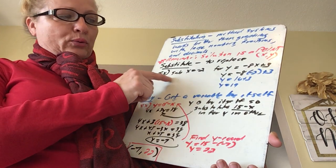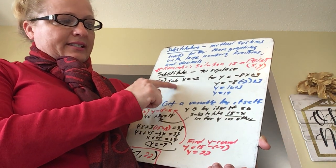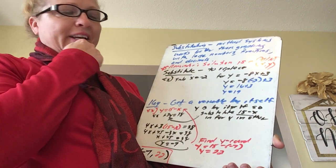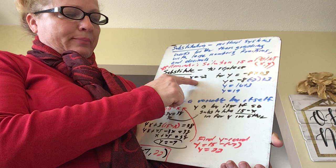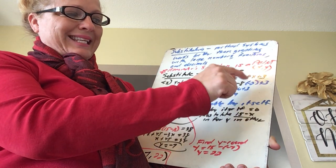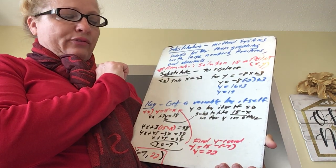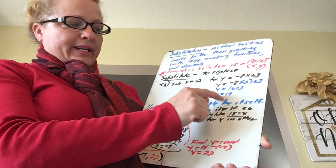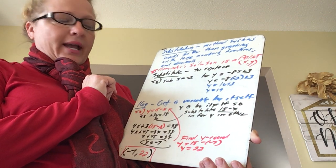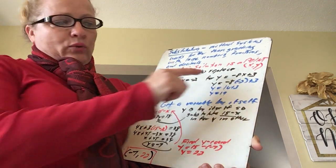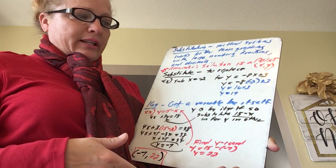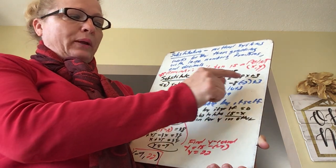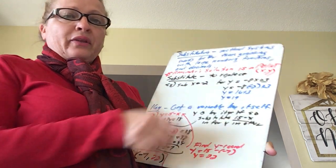Let's do a very simple example — this is not a system. I just said substitute x equals negative 2 into this linear equation. If I put in negative 2, which means I'm replacing x with negative 2 — substitution means to replace — I get 16 plus 3 is 19. This is just a line, and negative 2, 19 would be a point on that line. The point was to remind you that substitution means we are replacing the variable with a number.